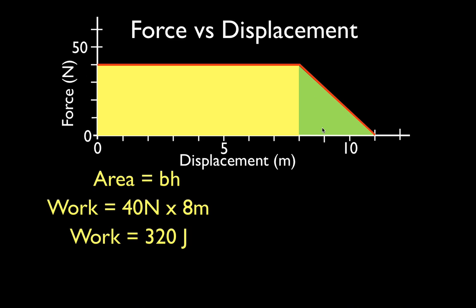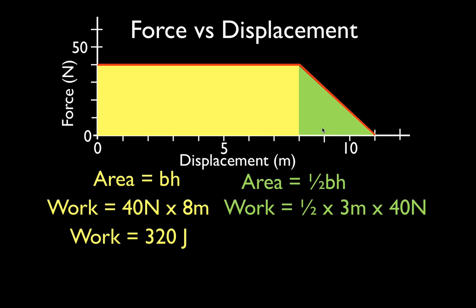Now let's do the triangle. The area of a triangle is one half the base times the height. The work equals one half times 3 meters times 40 newtons. Three times 40 is 120, times one half equals 60. That's newton-meters, and a newton times a meter is a joule. So during the last three meters — from 8 to 11 — even though the force is decreasing, the force does 60 joules of work.